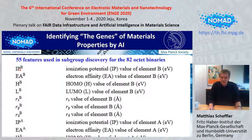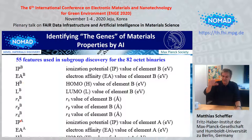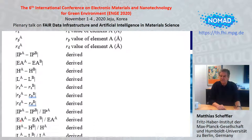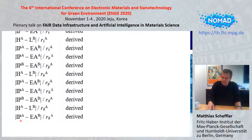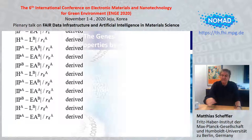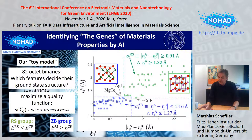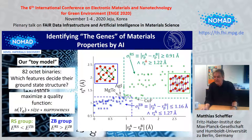We used 55 features altogether to describe these 82 octet binaries. These are candidates and we just have to see which survive. They include the ionization potential of atom B, electron affinity of atom B, HOMO level of atom B, LUMO level of atom B, the spread of the s-electron wave function of atom B — that is the position of the outer maximum — and the same for the p and d wave functions. All atomic quantities, the same for atom A, and several derived quantities which are differences or ratios.